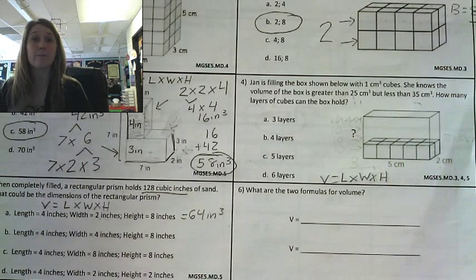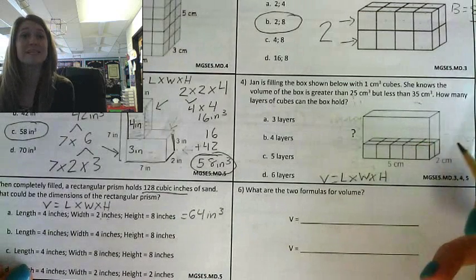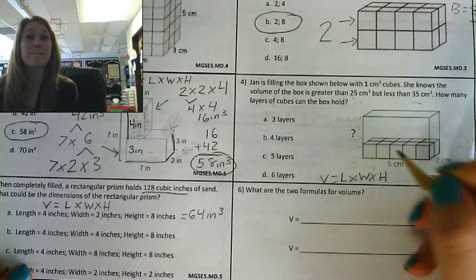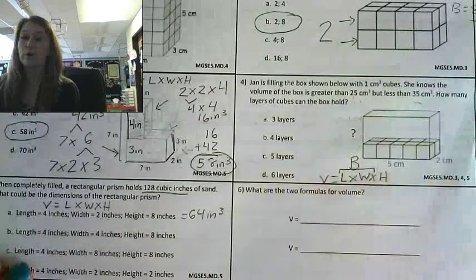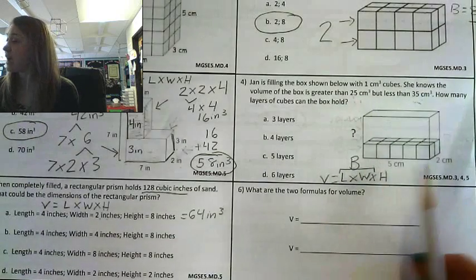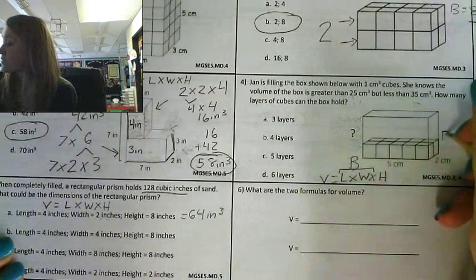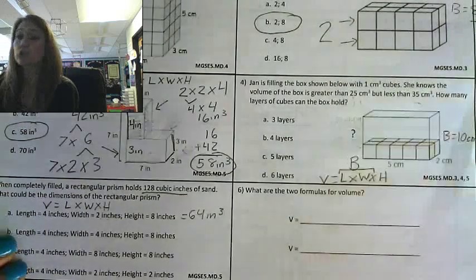We call that bottom layer the base, and we know that another formula for volume is big B times height, base times height. This length times width, you can also call your big B, your base. So my base would be five times two, so this figure is going to have a base of 10 centimeters squared.